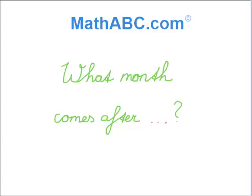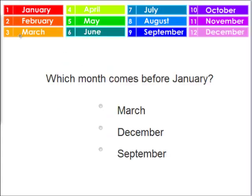What month comes after? We see here all the months of the year: January, February, March, April, May, June, July, August, September, October, November, and December.